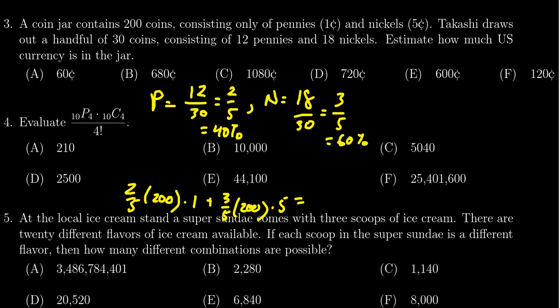Notice here five goes into 200 forty times, times that by two you're going to end up with 80. So 40% of 200 is 80 pennies. I'm going to times it by one because it's worth one penny.